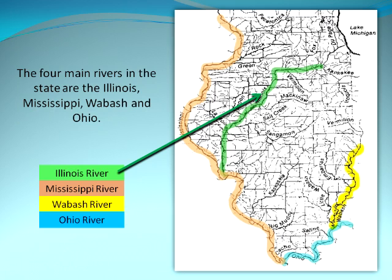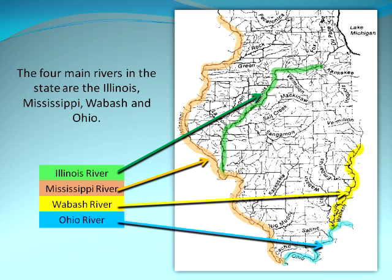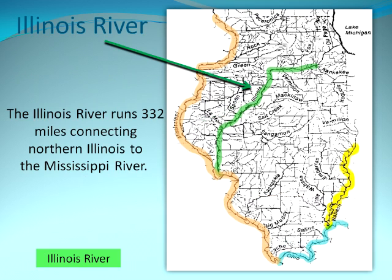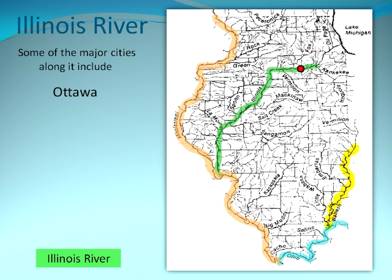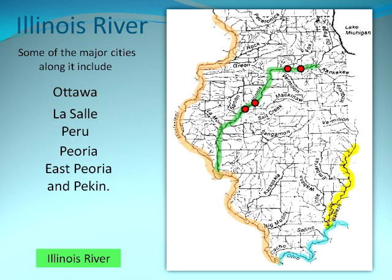The four main rivers in the state are the Illinois, Mississippi, Wabash, and Ohio. The Illinois River runs 332 miles, connecting northern Illinois to the Mississippi River. Some of the major cities along it include Ottawa, LaSalle, Peru, Peoria, East Peoria, and Pekin.